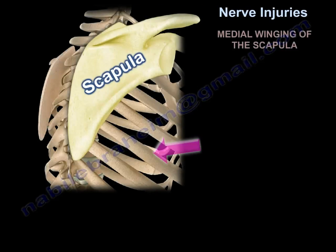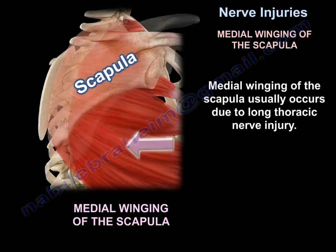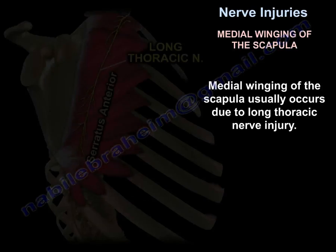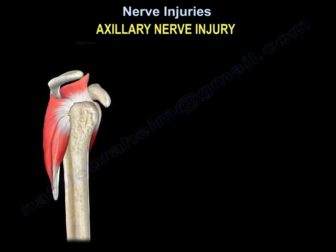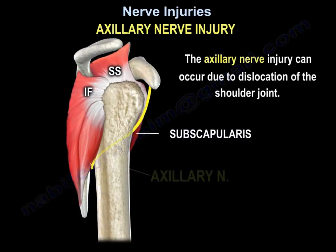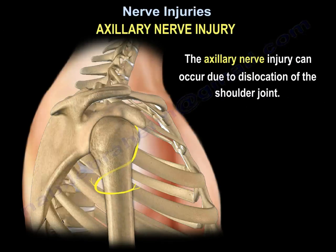Medial winging of the scapula usually occurs due to long thoracic nerve injury. Exilating nerve injury can occur from dislocation of the shoulder joint.